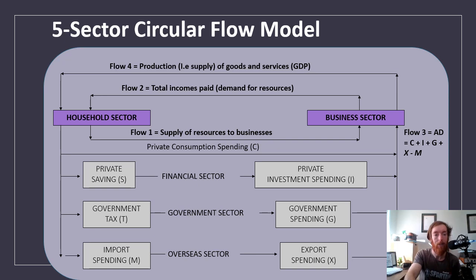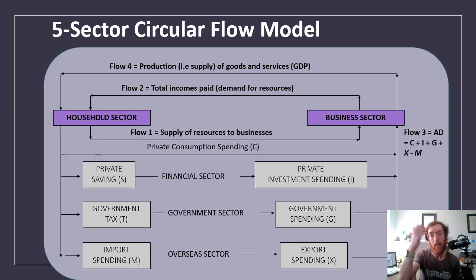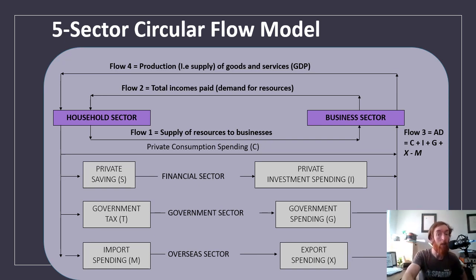So that money goes back to the household sector. It goes from the household sector to businesses, then back to households. For the most part, the majority of our money goes towards private consumption spending — basically spending on goods and services. About 70% of our income goes to private consumption spending: bills, petrol, groceries, and so on. But not all of our spending goes there.